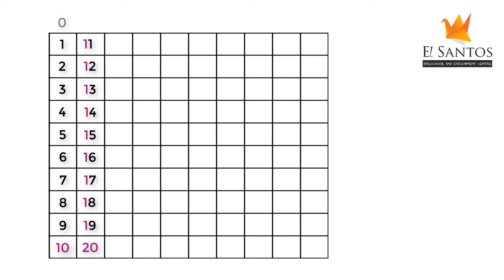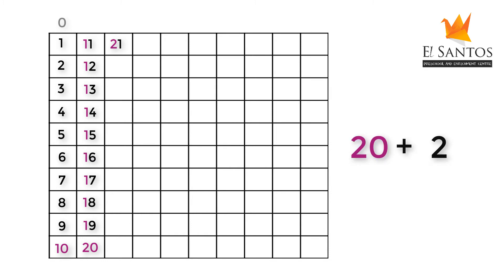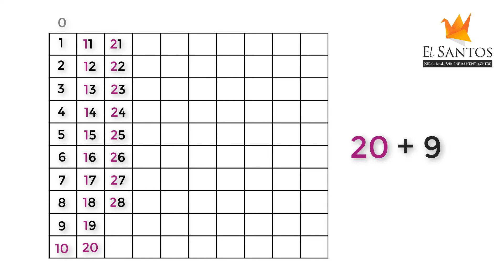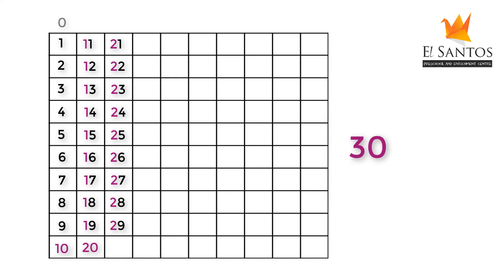Now, 21 is made from 20 and 1, 22 is made from 20 and 2, and so on. And 29 is made from 20 and 9. The next number, 30, is made from 20 and 10. Again, notice that the colour of the number 2 from 20 is carried into the next 10 block to show that it's the same 2 from the 20 that is used to make the next set of numbers.